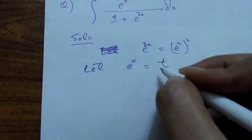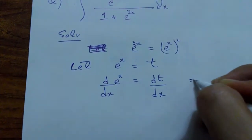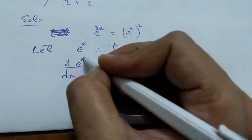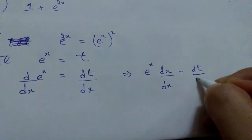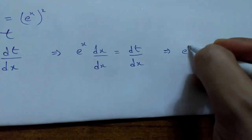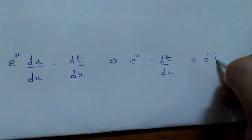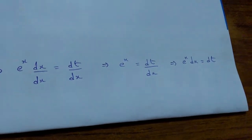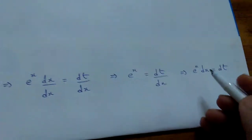On differentiating both sides with respect to x, the derivative of your exponential function gives you the exponential function back, and applying the chain rule on the power gives you e^x equals dt/dx. Moving dx over, we get e^x dx = dt. This is the u-substitution methodology — you can see one of my videos in the description box for reference on how simple u-substitution works.